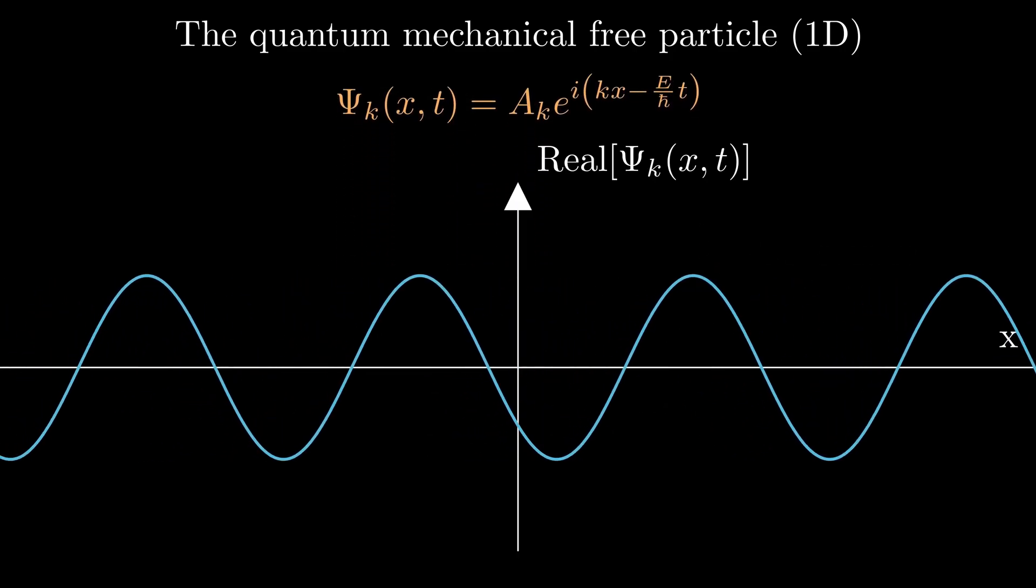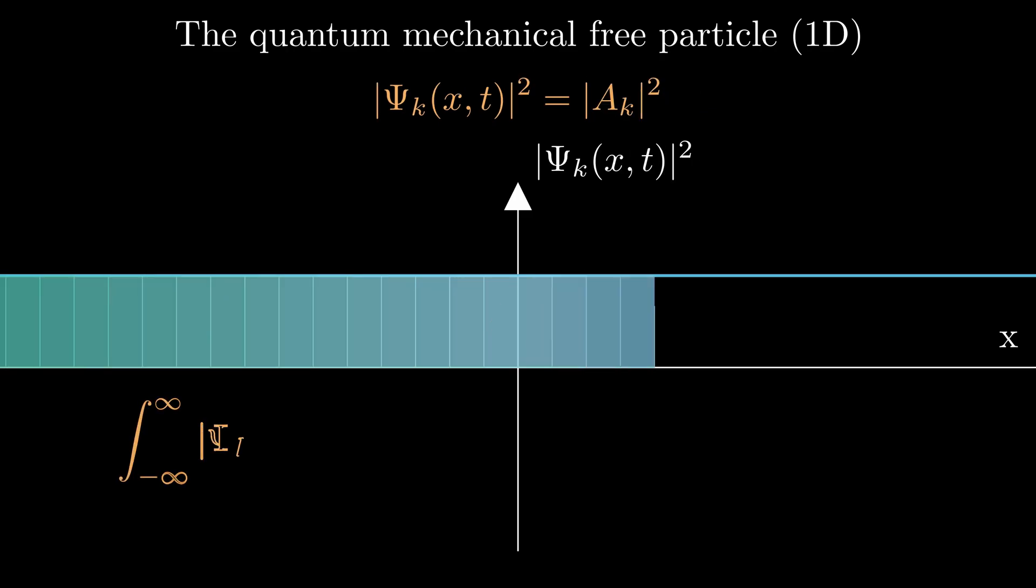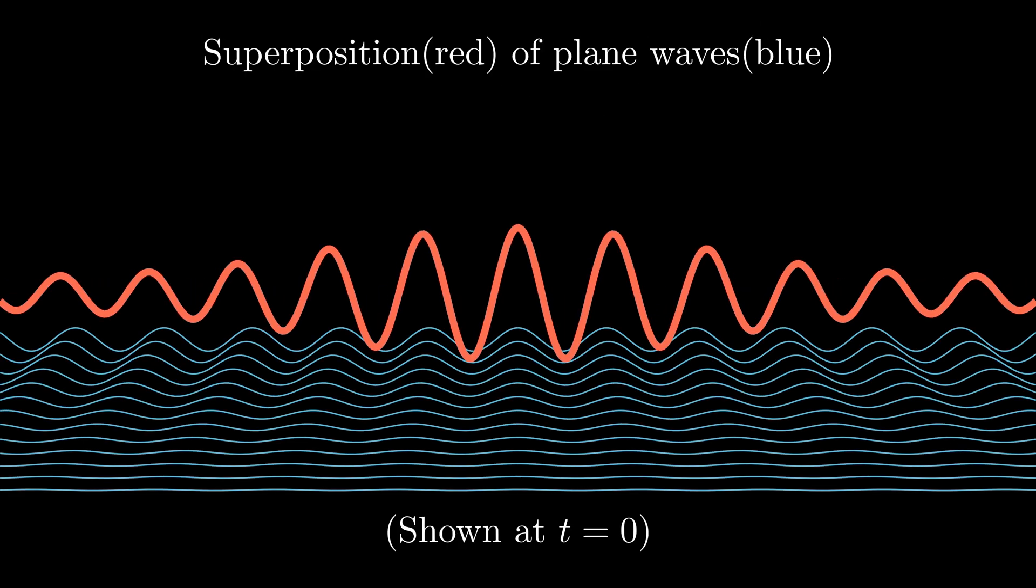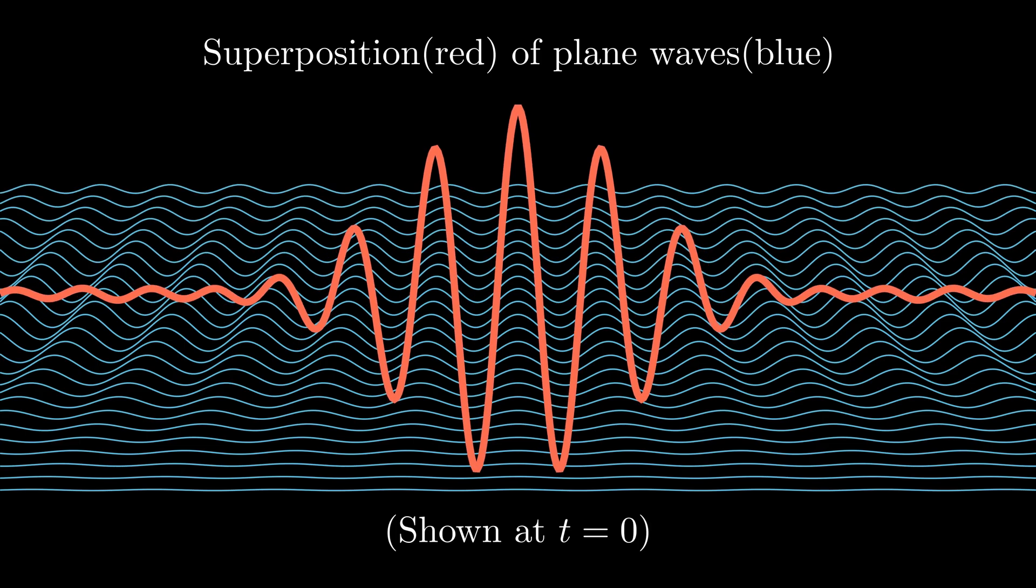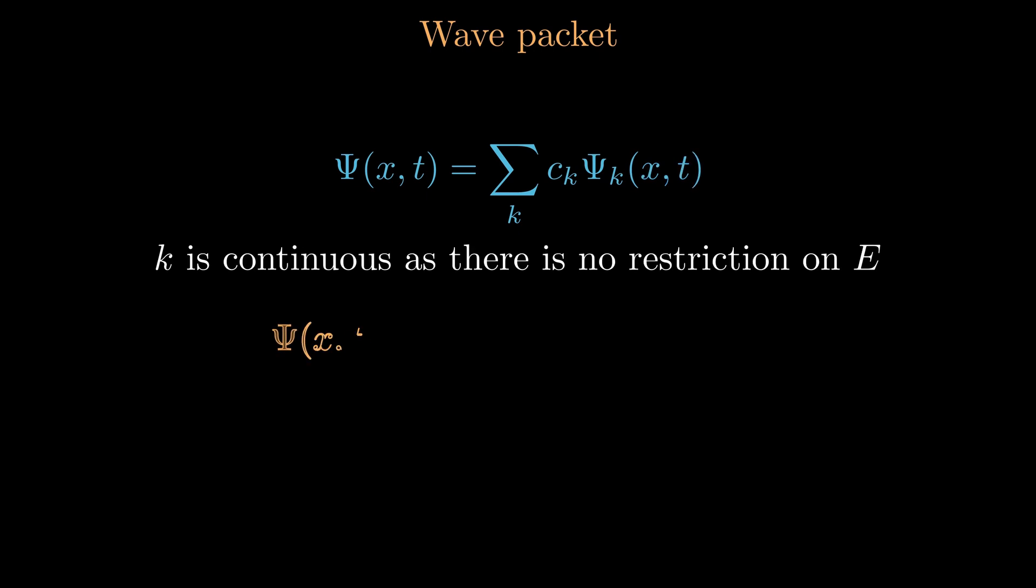However, normalizing these infinite plane waves leads to a divergent integral. This implies that free particles cannot exist in these stationary states, meaning they can't have a fixed energy. The solution? We can combine multiple plane waves with weighted amplitudes to create a wave localized in space, making it normalizable. Superposition guarantees this localized wave remains a solution to the Schrödinger equation.